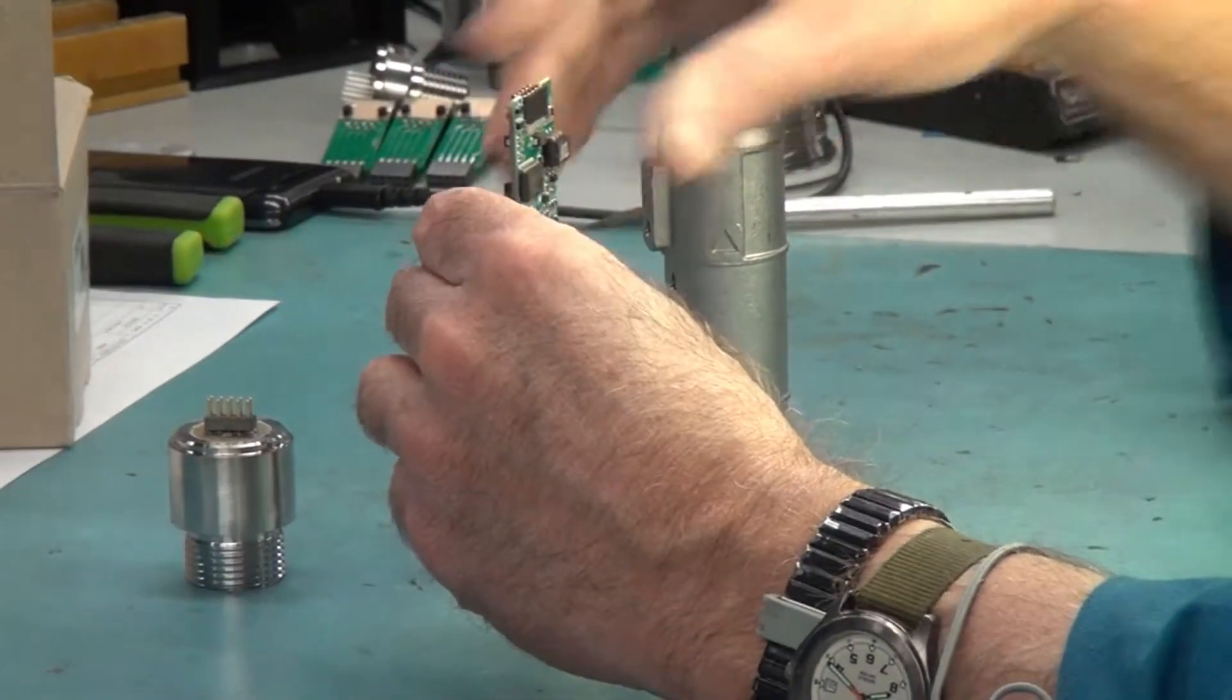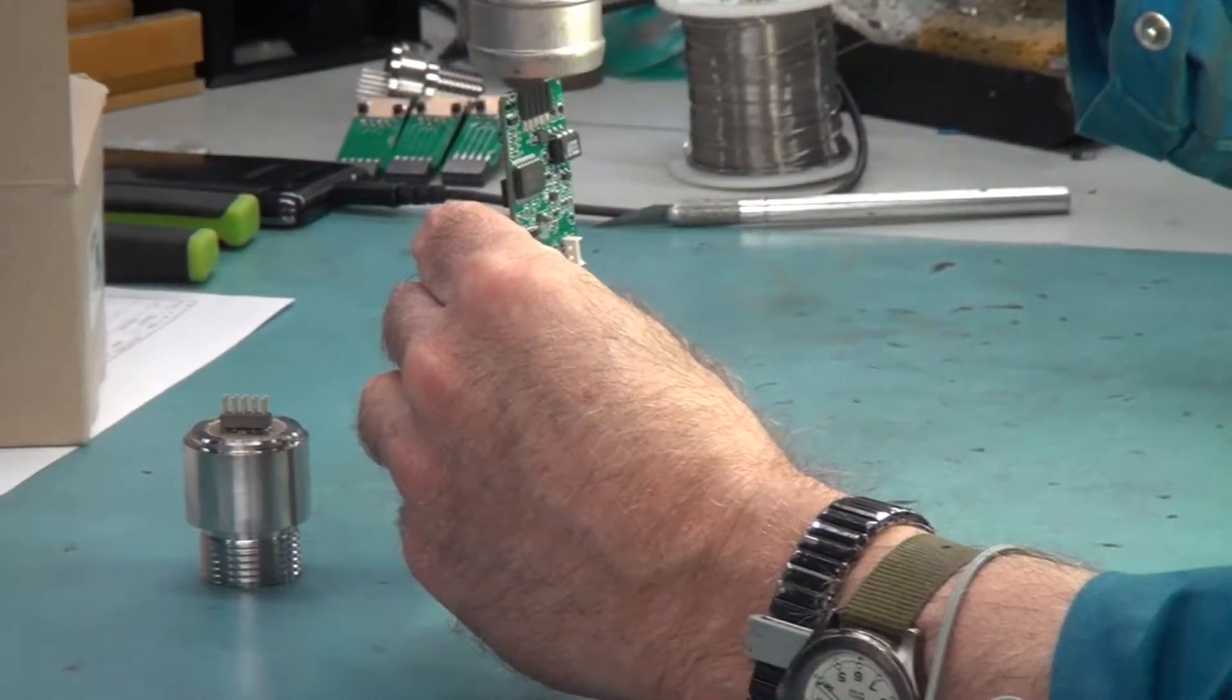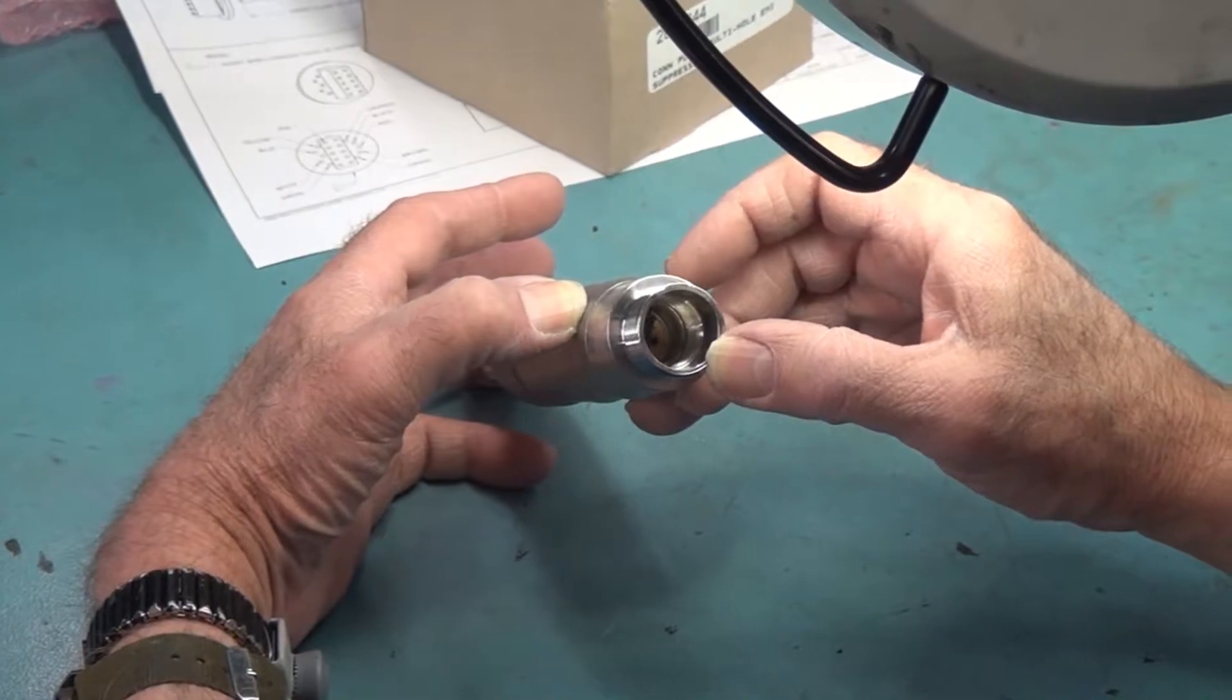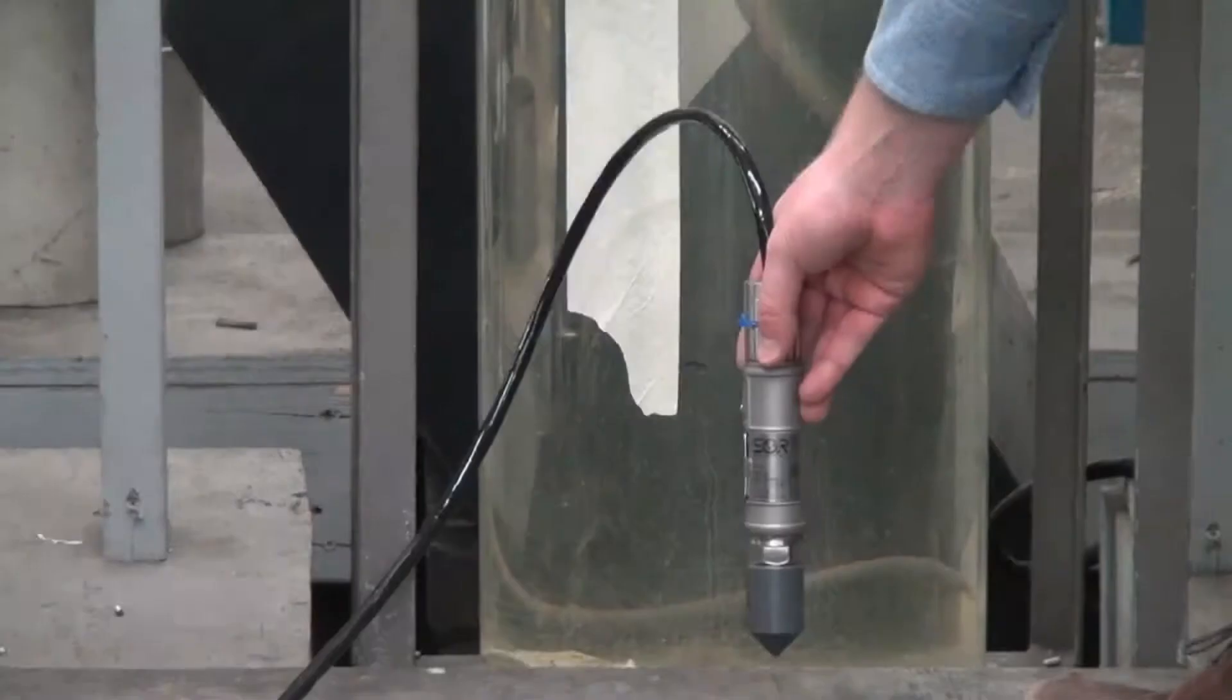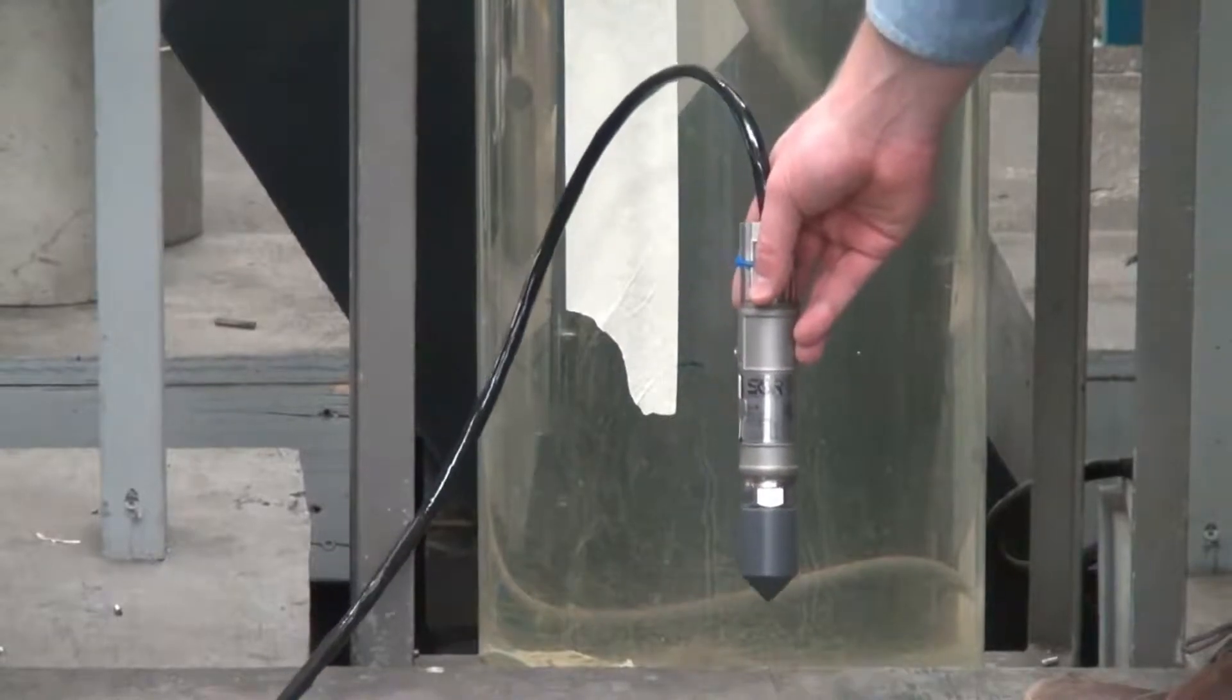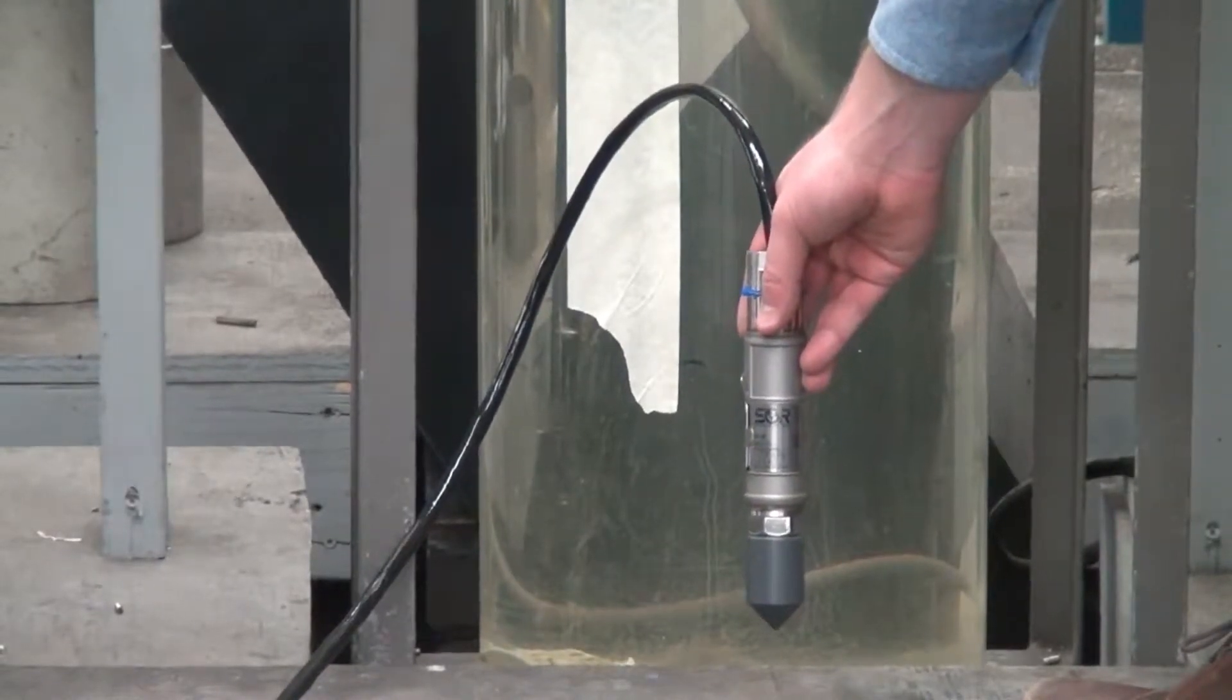The 815LT Submersible Level Transmitter is actually just a pressure transmitter. The way it works is it measures the hydrostatic pressure at the bottom of the tank. The point at which the level transmitter is at the bottom of the tank is the max height of the liquid level that you can measure.